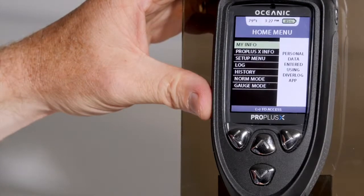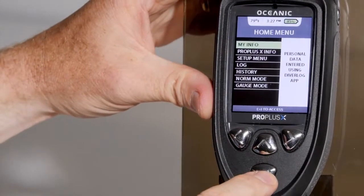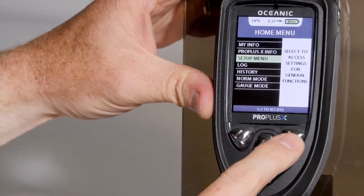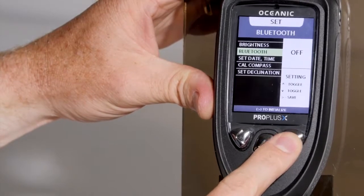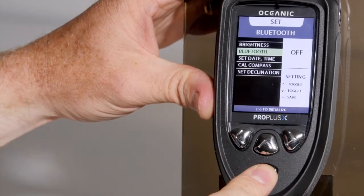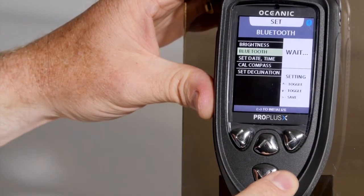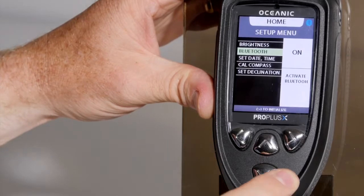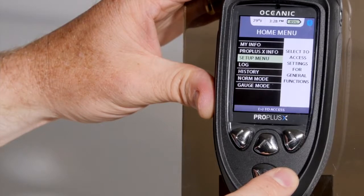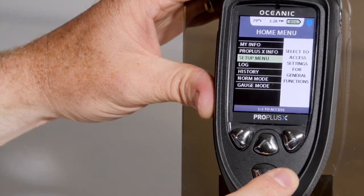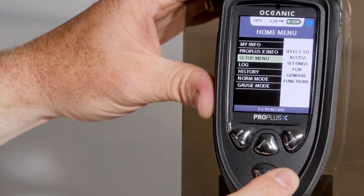To download the Pro Plus X using the integrated Bluetooth, you first need to turn it on. Scroll down to Set Menu and select Bluetooth. Turn the Bluetooth off to on and wait for it to activate. Exit out to the main menu and you're ready to initiate download. It's recommended to turn the Bluetooth off when you're done to prevent the unit from using too much current and running the battery down prematurely.